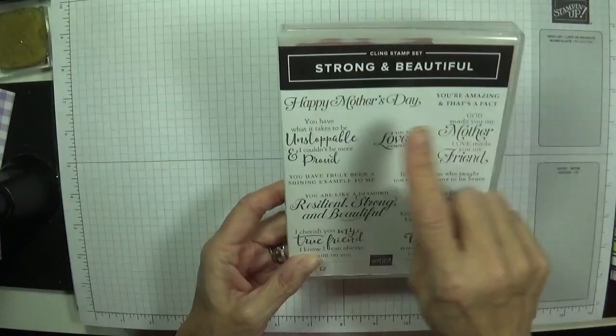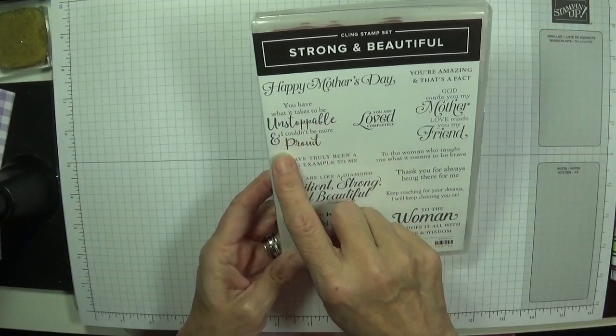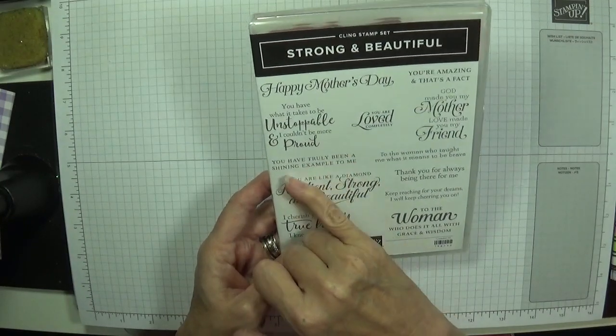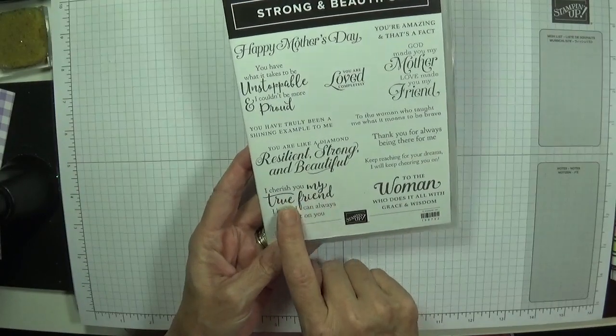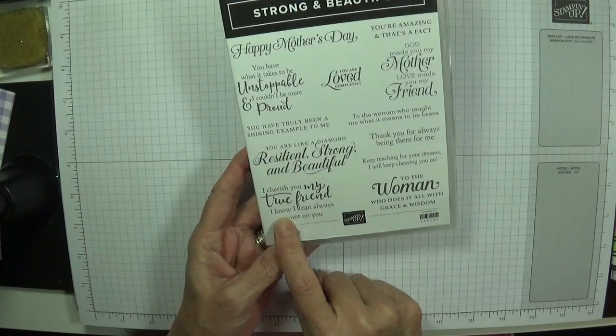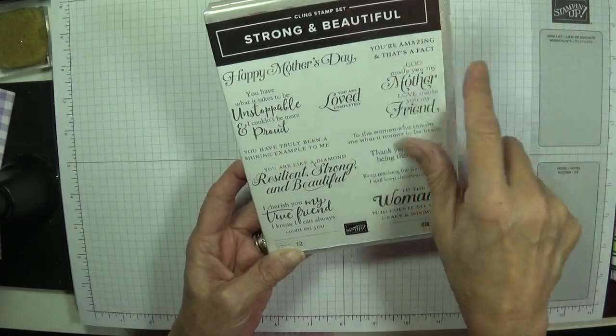And then the sentiment I'm using is: You are like a diamond, resilient, strong and beautiful because it represents this stamp set. Absolutely gorgeous. And it comes from here. There's so many nice ones. Happy Mother's Day. You have what it takes to be unstoppable and I couldn't be more proud.